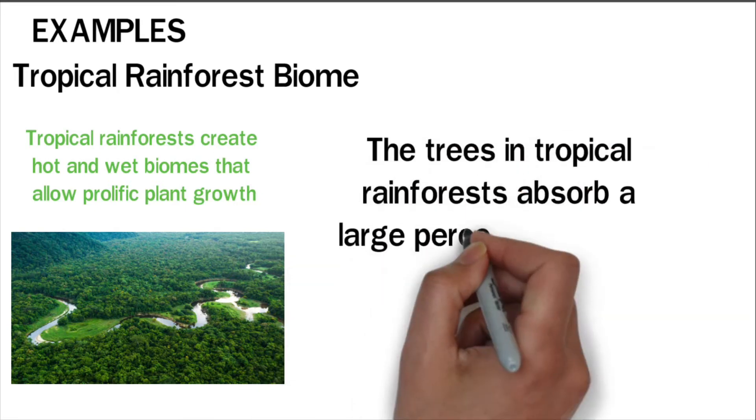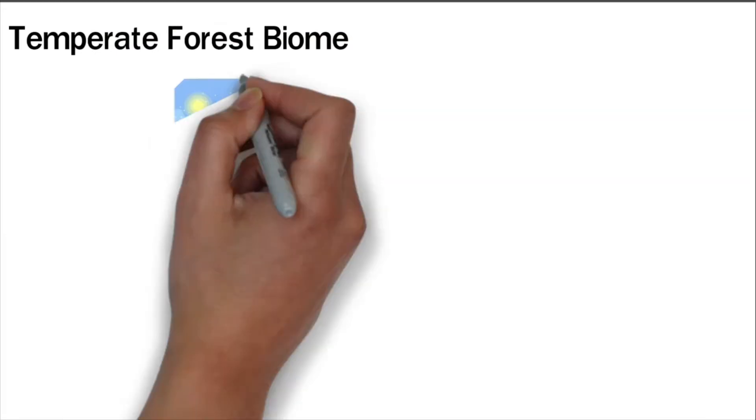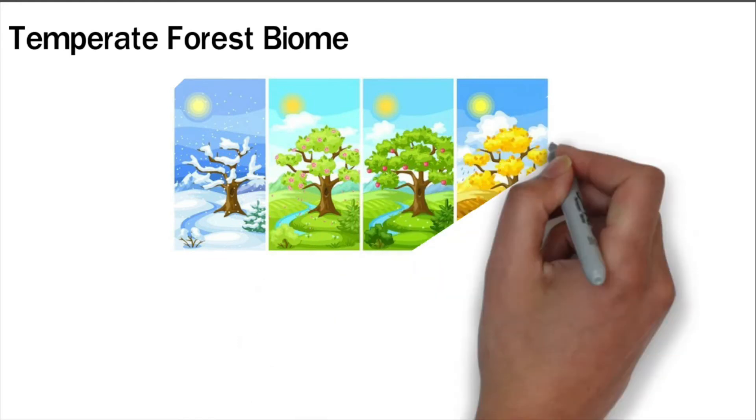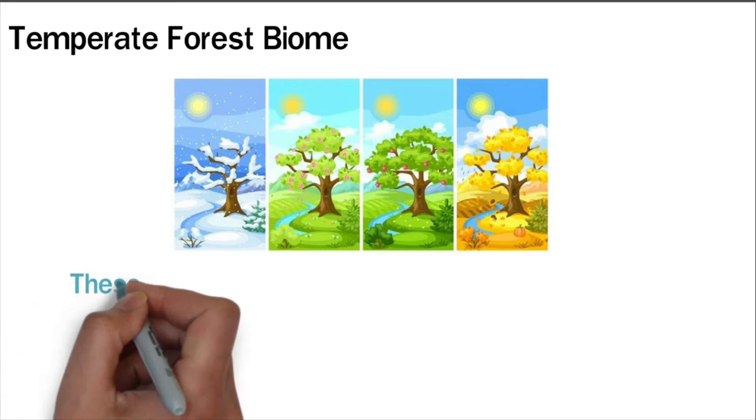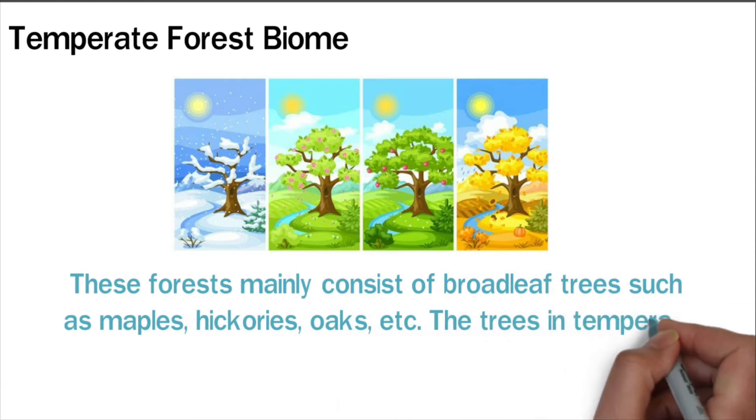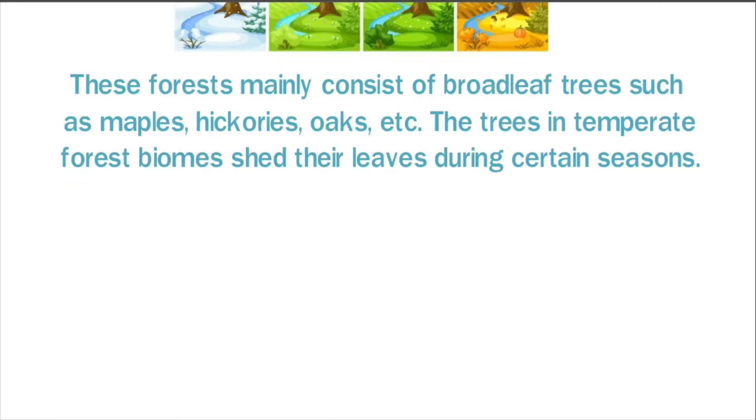Temperate forest biome: Temperate forest biomes experience all four seasons throughout the year. The temperature conditions may vary depending on whether it is winter, summer, spring, or autumn. They also experience varied precipitation. These forests mainly consist of broadleaf trees such as maples, hickories, and oaks. The trees in temperate forest biomes shed their leaves during certain seasons.